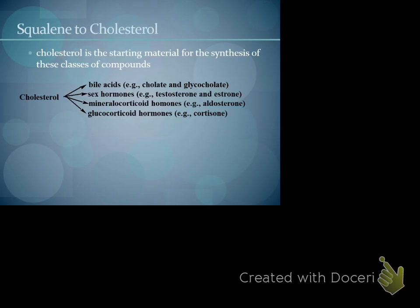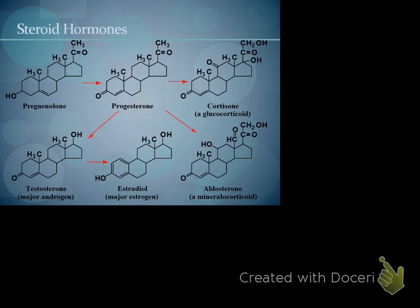So now cholesterol itself — to review from A&P — is the starting material for a large number of different types of biological compounds and hormones, including bile, the bile acids, sex hormones, the mineral corticoids, and glucocorticoids. These are just some examples of the steroid hormones. I don't expect you to memorize those structures, other than recognizing that if I gave you the structure you would say, oh, that's a sterol or steroid hormone of some sort. One thing I like to point out is that there's very, very little difference between testosterone and estradiol — between the male and female hormones.